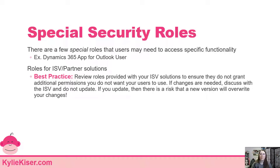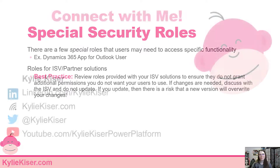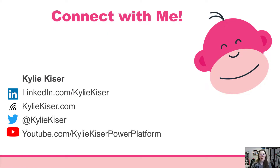A partner role might inadvertently grant access to all contacts or accounts that you don't want to expose. Talk with the partner or vendor to get that role updated so it only has the exact access needed for the solution. Don't just fix it in your own environment, because when you get a new version of that solution, those unwanted permissions will come back. Work closely with your vendors to get these roles set the way you want. That's all for security roles today — please like and subscribe and get ready for the next video tomorrow.